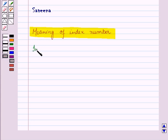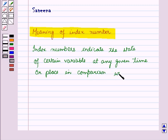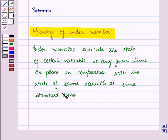We can say that index numbers indicate the state of certain variable at any given time or place in comparison with the state of same variable at some standard time or place.